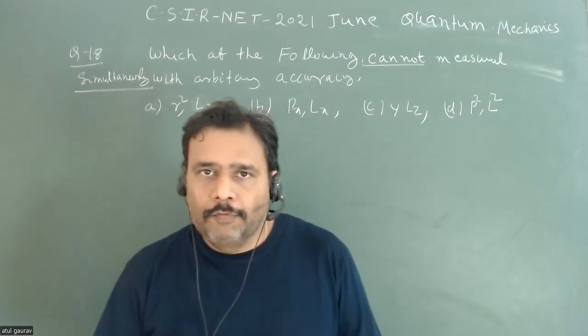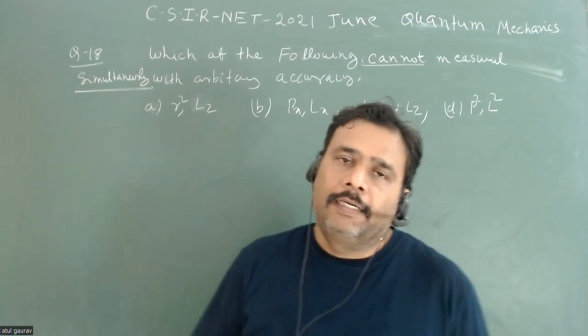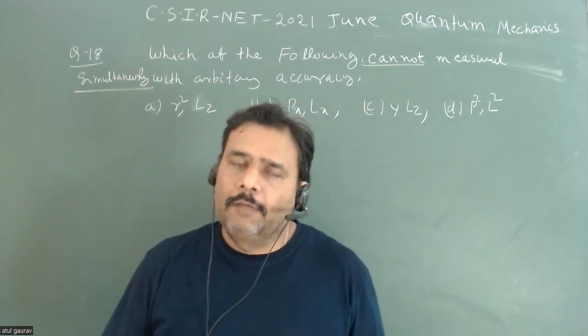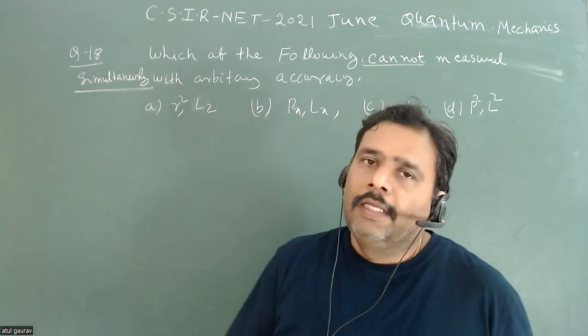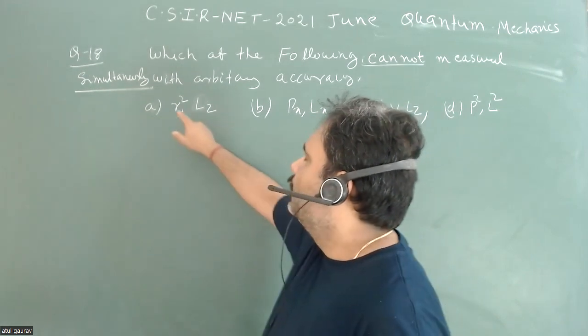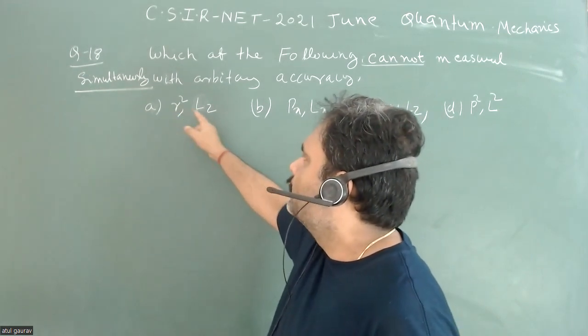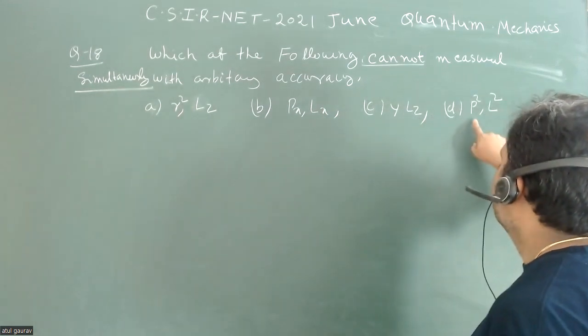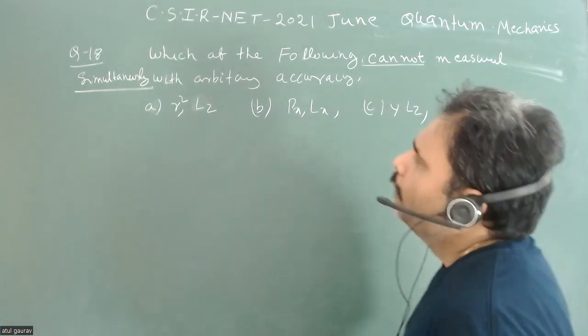Hello students, let's solve a problem from CSIR NET 2021 quantum mechanics on angular momentum algebra. In this problem, four options are given as operators: first is r² Lz, second is Px Lx, third is y Lz, and fourth is P² L².